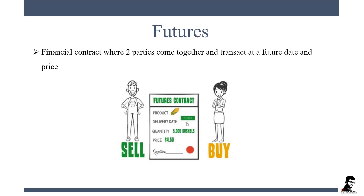So during the contract time, when the price gets high you are not making more profit because the contract price is fixed, and if the price gets very low during that contract time you are not making a loss because the price is already fixed in the contract. So this is a kind of risk management tool. Whenever the price is up or low, you are getting the price as created in the agreement up to the validity time. So this is known as a futures contract.